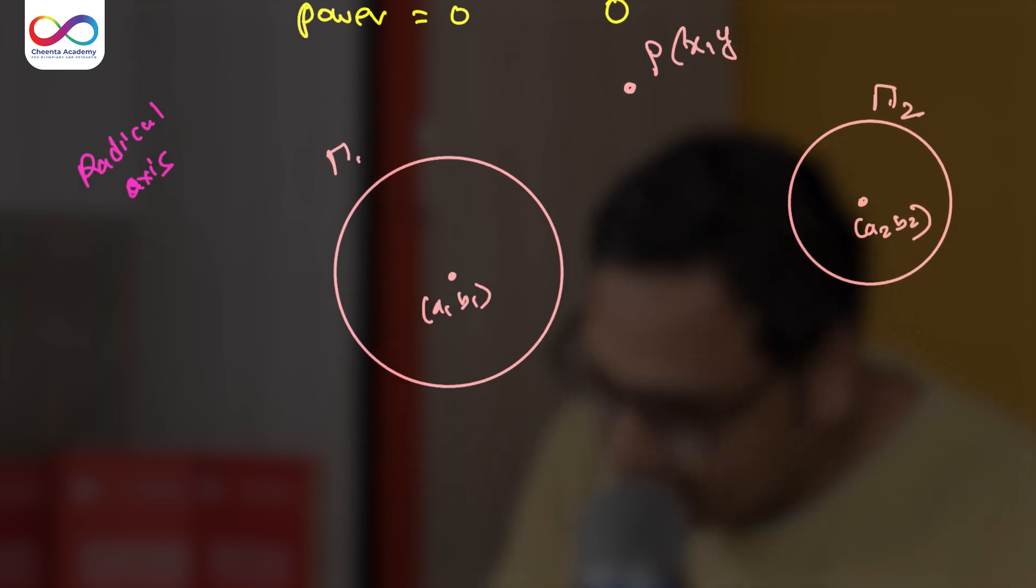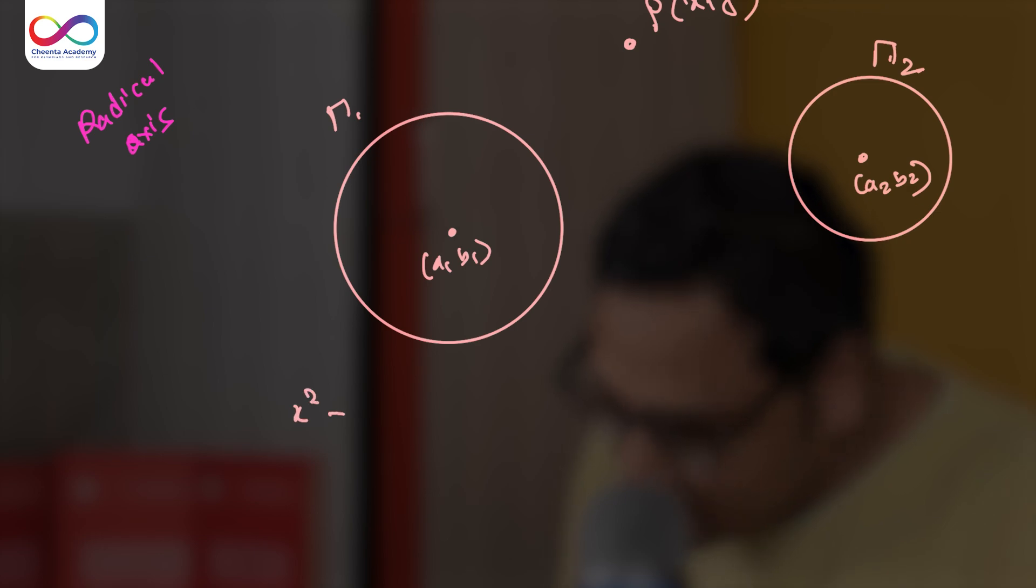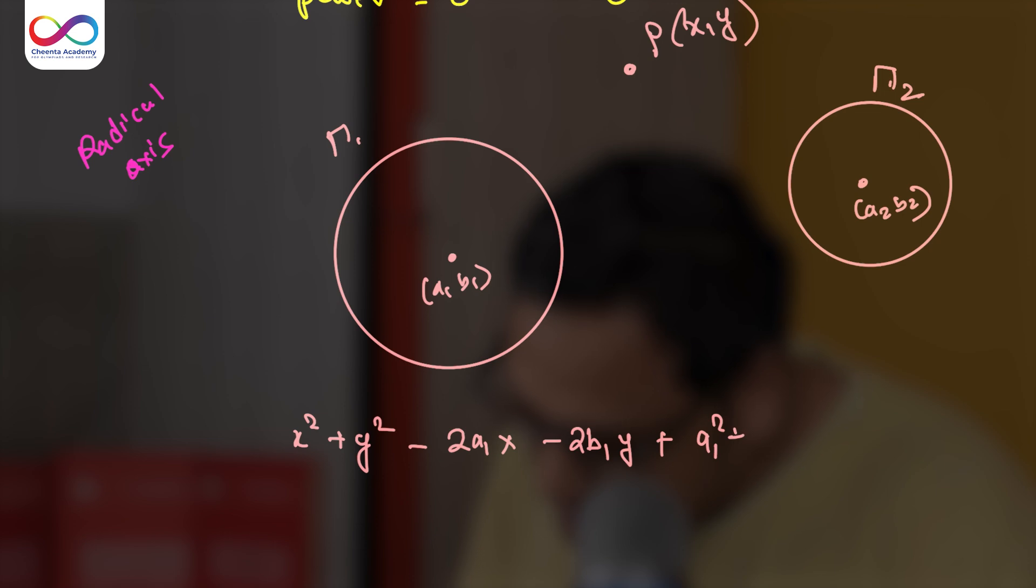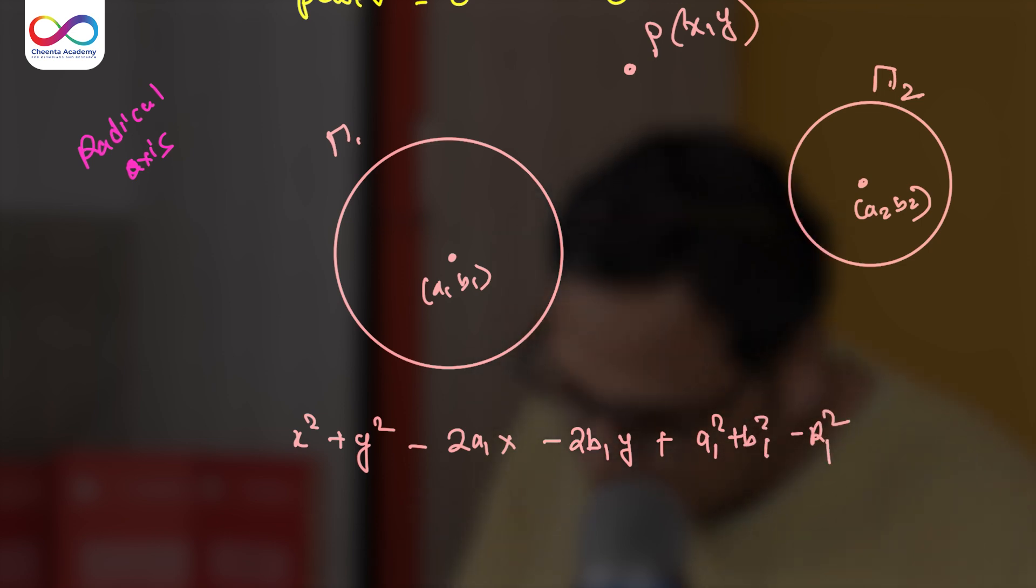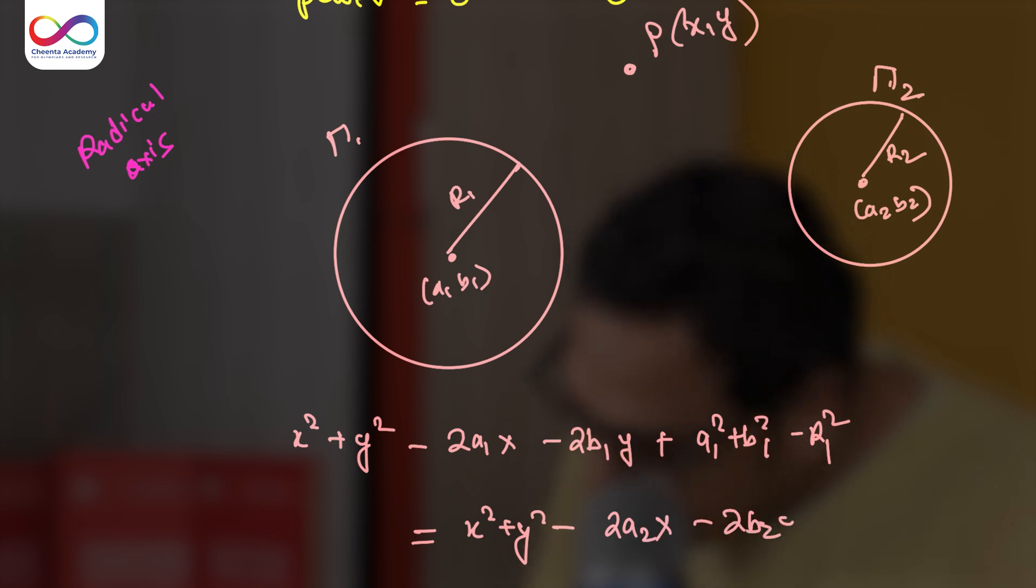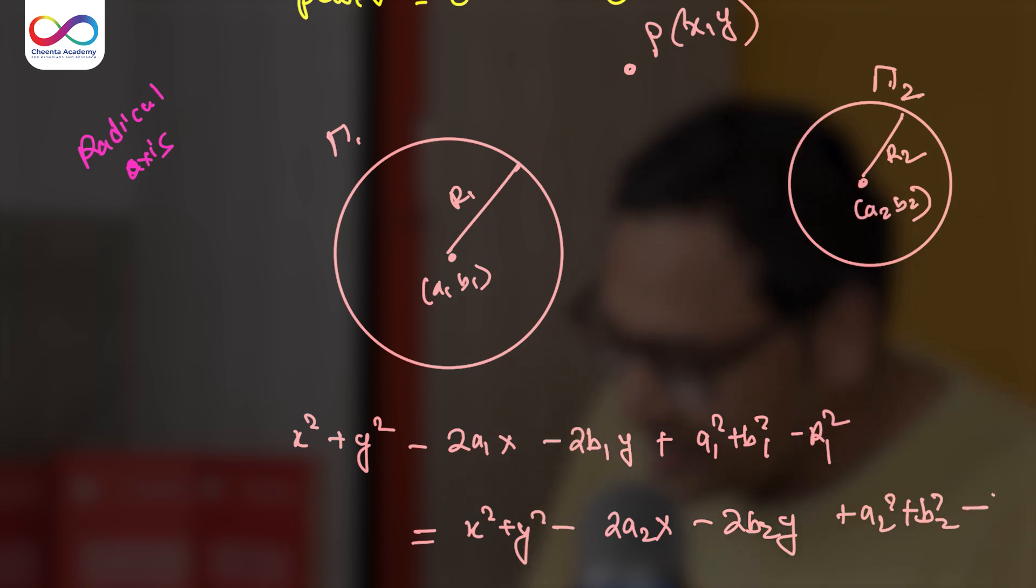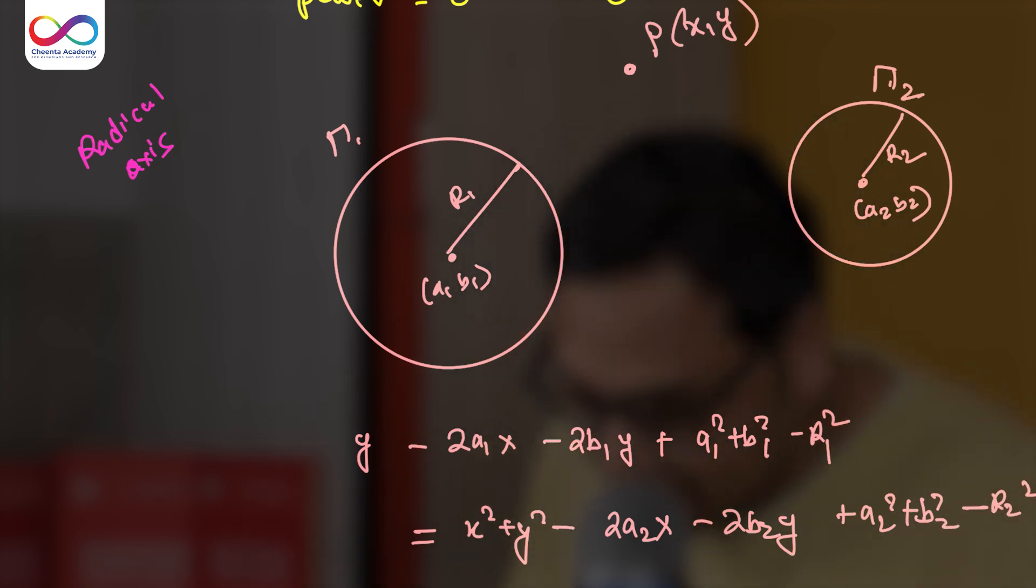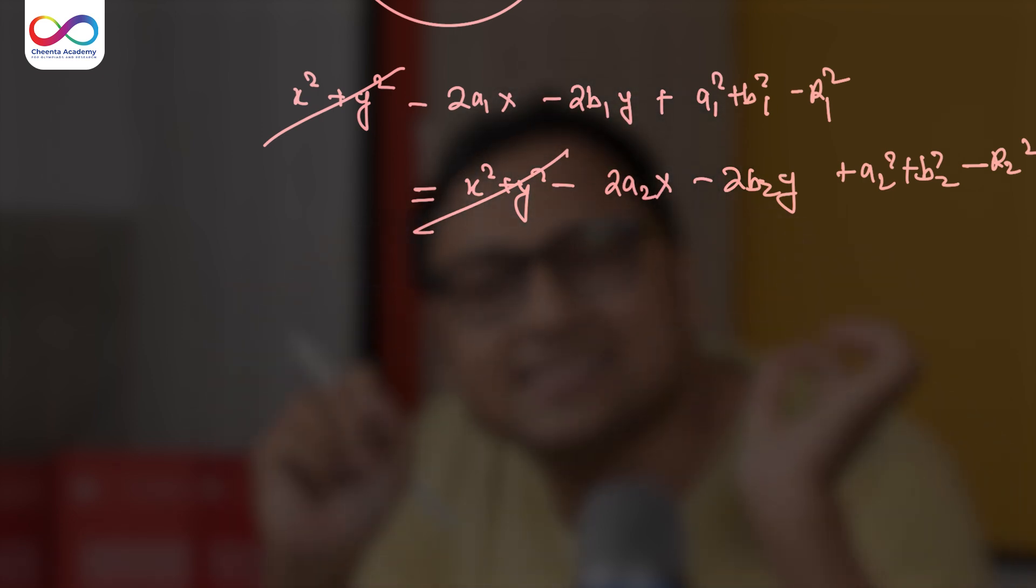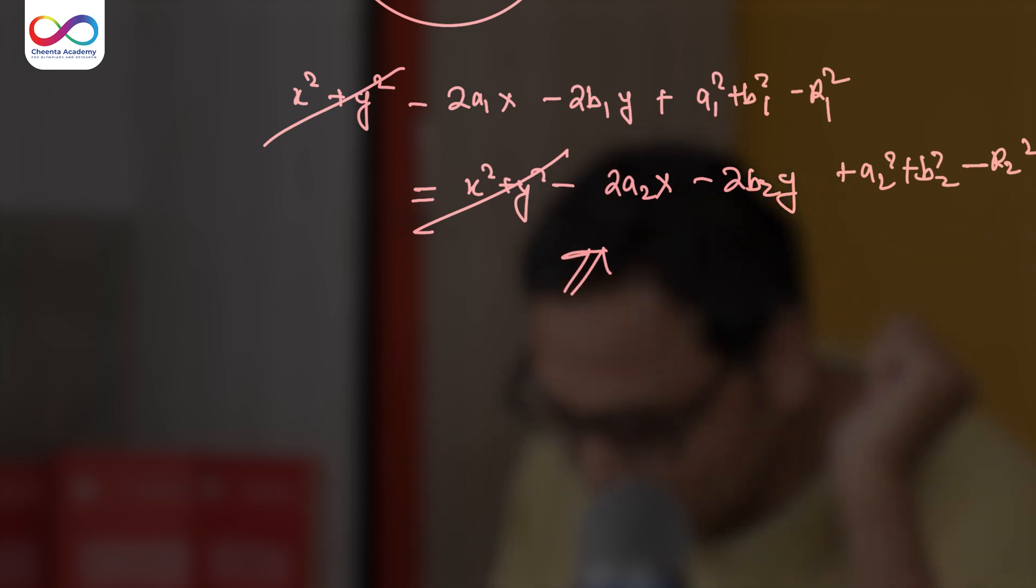Suppose P is (x,y), then we have x² + y². The power with respect to gamma 1 will be -2a₁x - 2b₁y + a₁² + b₁² - R₁². The radius is R₁ suppose and this radius is R₂. We want that to equal x² + y² - 2a₂x - 2b₂y + a₂² + b₂² - R₂². Now x², y² cancels off. These two cancel off. So at the end of the day, we have a single degree equation in x and y. So this is an expression for a straight line.